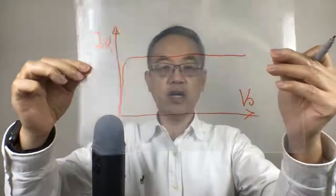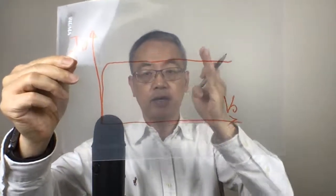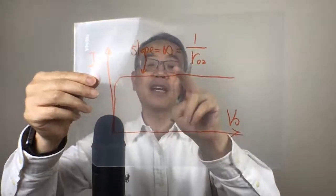So ideally, what do you mean by constant current source? What's the perfect output characteristic? It should be like this. If you claim yourself as a constant current source, that means you need to provide a constant current independent of output voltage. In other words, the slope should be zero.